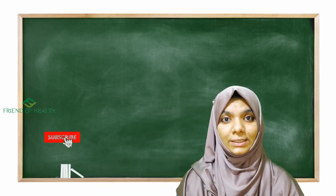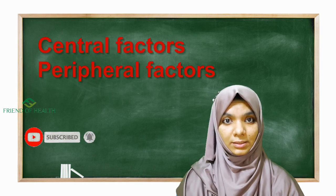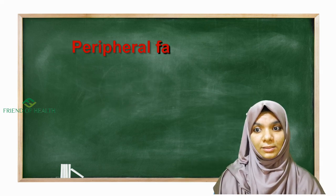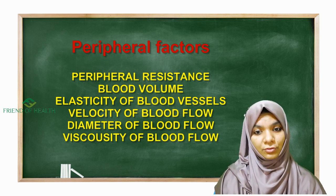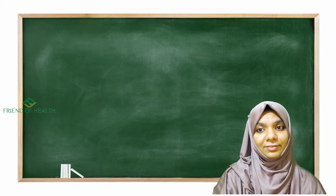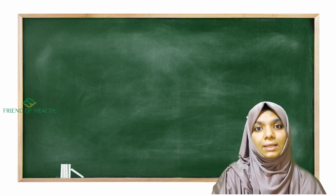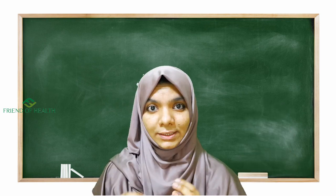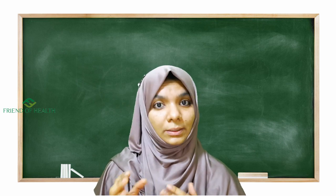Now let us see what factors affect blood pressure. We have central factors and peripheral factors. Central factors include cardiac output and heart rate. Peripheral factors include peripheral resistance, blood volume, elasticity of blood vessels, velocity of blood flow, diameter of blood vessels, and viscosity of blood.